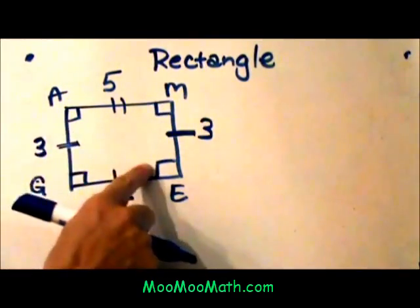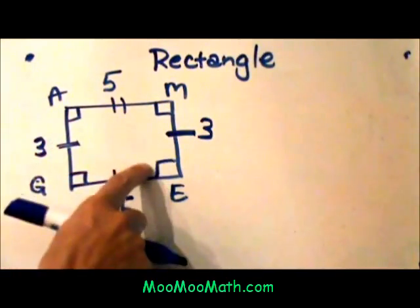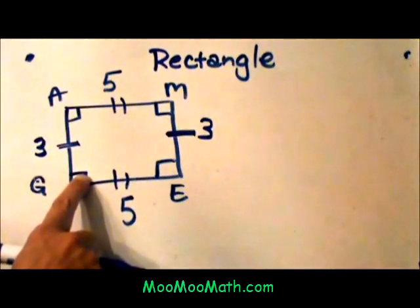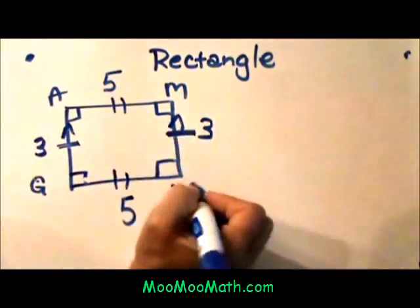You can also see the opposite angles are congruent, and this is where the rectangle is different. 90 degrees, 90 degrees, opposite angles are congruent to each other. The opposite sides are congruent and parallel, meaning GA, this side is parallel to EM.